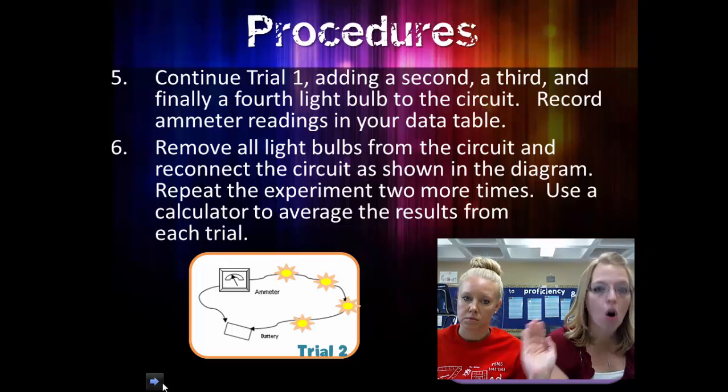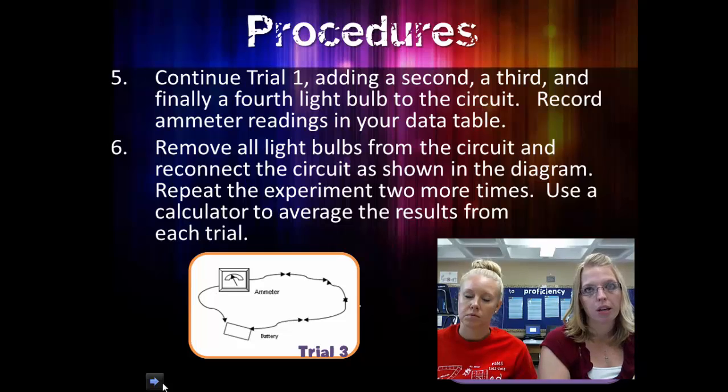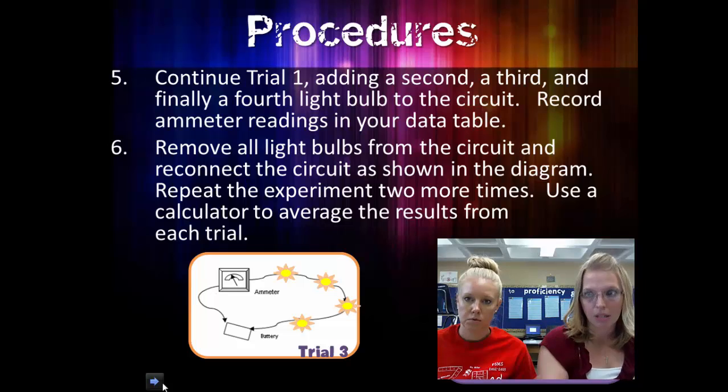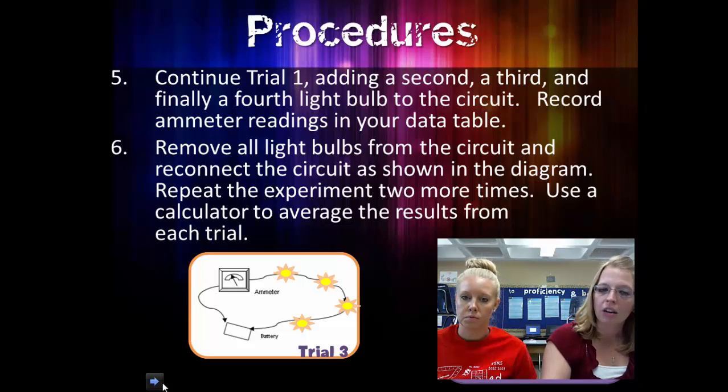And then take them all out. Trial three. One bulb, two bulb, two bulb, three bulb, four bulb. A lot of kids get tempted to do one bulb three times in a row. But when you do that, you could have had the same mistake three times in a row.